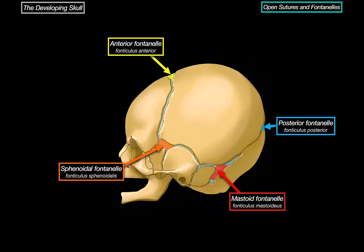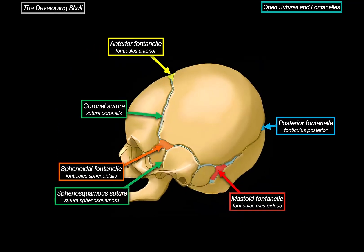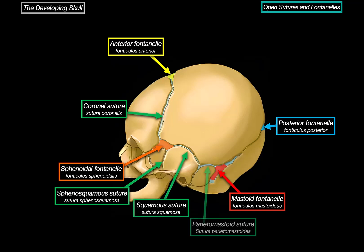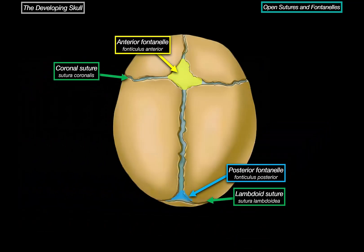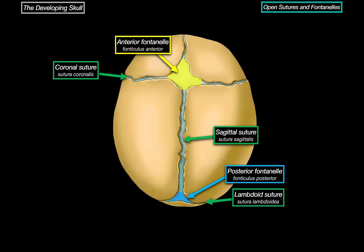We can also see the coronal suture, sphenosquamous suture, squamous suture, parietomastoid suture, and the lambdoid suture. Let's turn the skull to look at the superior view, where you'll see the sagittal suture at the top. In the front is the frontal suture, also known as the metopic suture, which runs between the two halves of the frontal bone.